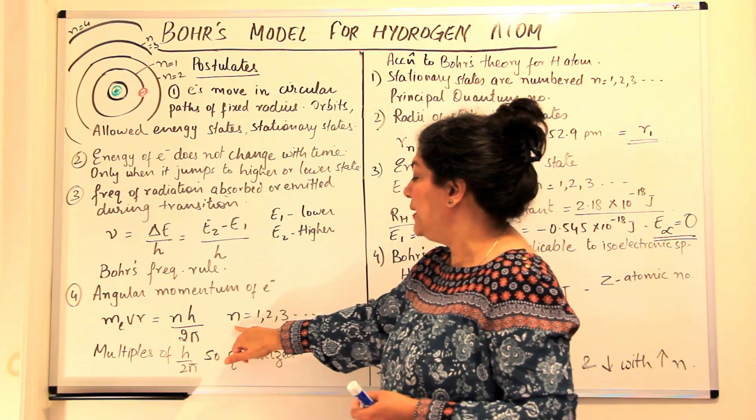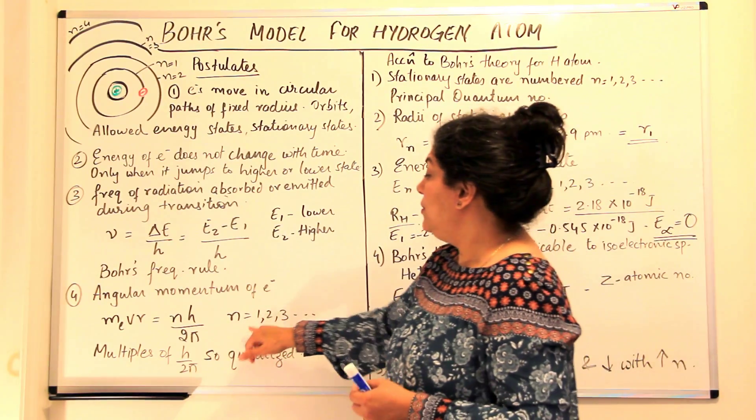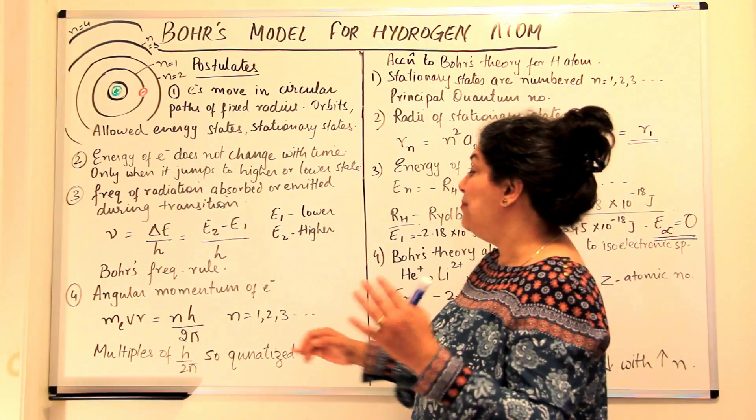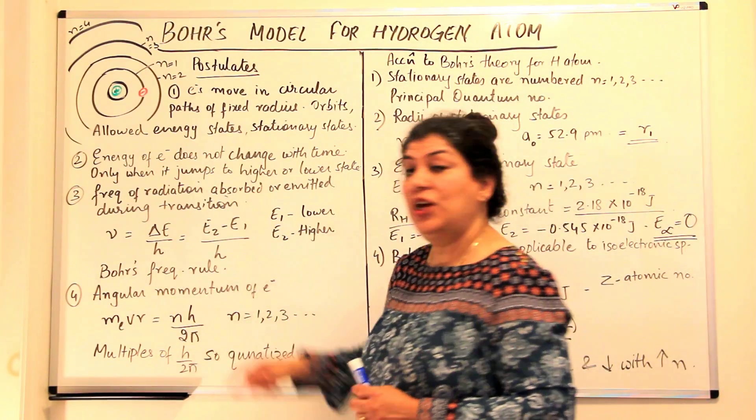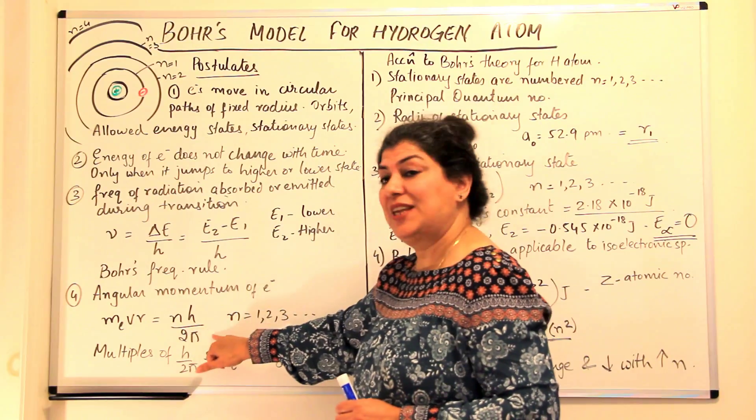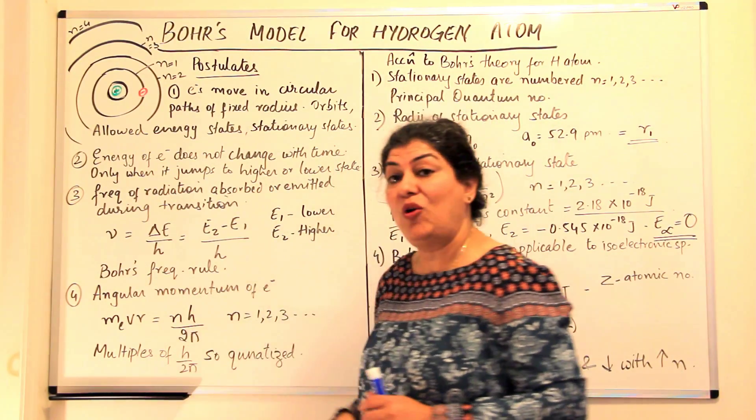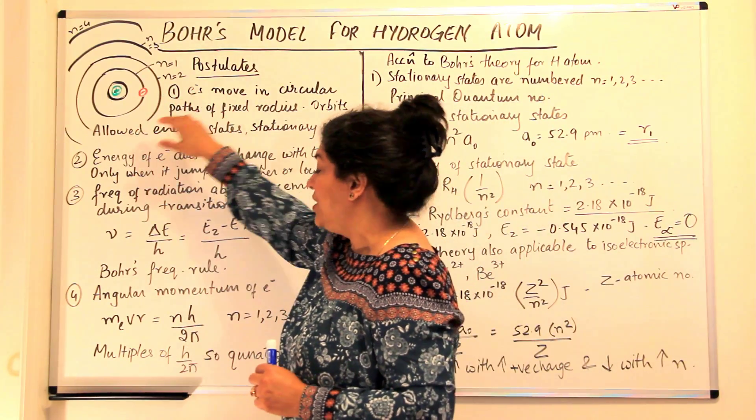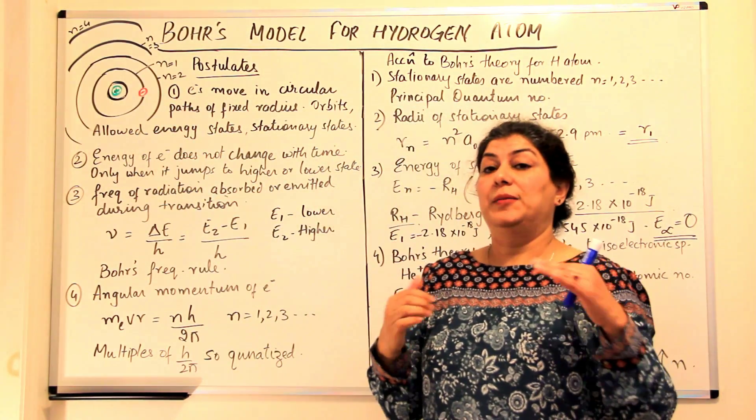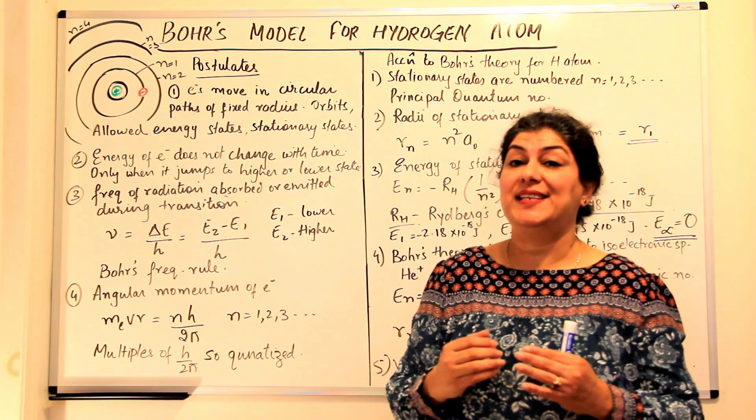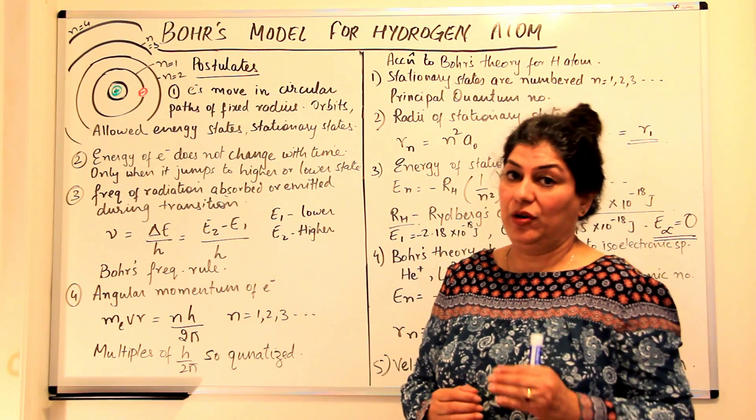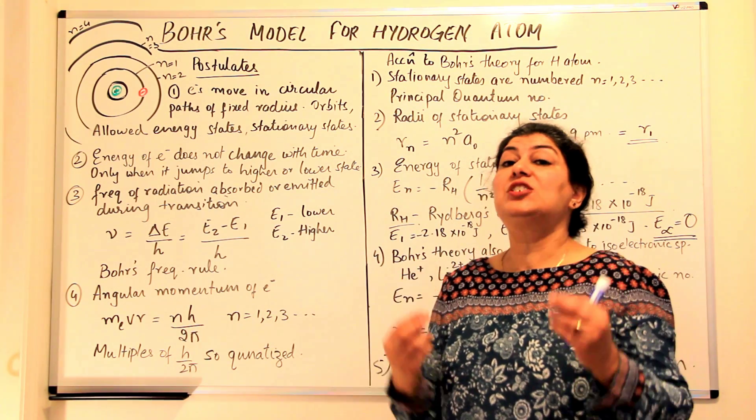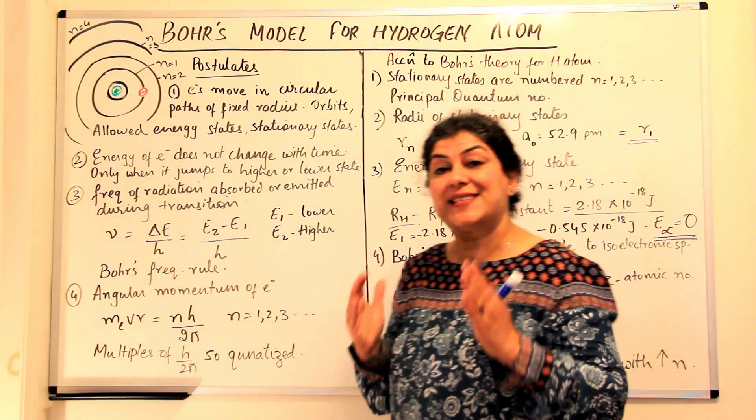So depending on the energy state where n is an integer, the angular momentum is actually a multiple of h upon 2 pi, where h is fixed and 2 pi is also fixed. So it is just a multiple of this, which means that the angular momentum of these energy states is quantized. They have fixed values of angular momentum, they have fixed energies and therefore the concept of quantization was being accepted.